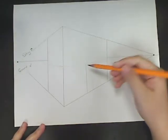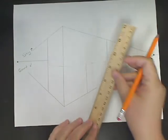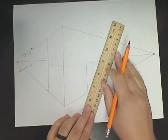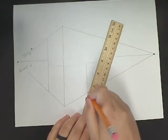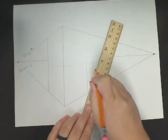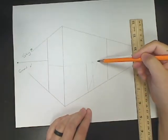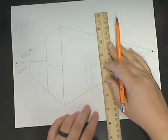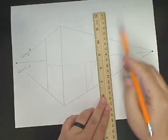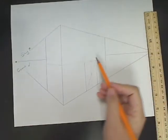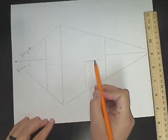And I'm gonna line my ruler up with this bottom corner and the middle of the line where I put that dot. Now I know where the other side of my door is, so I'm gonna draw a vertical line with my ruler. So now I have my doorway.